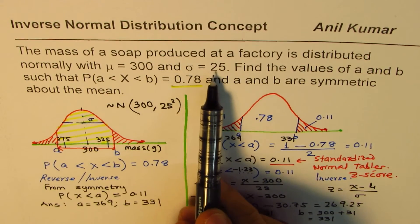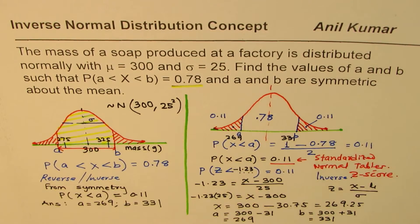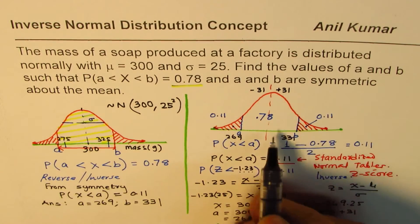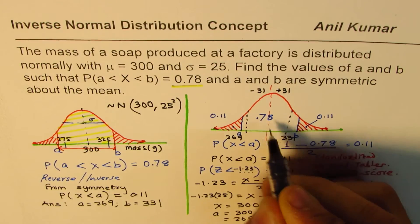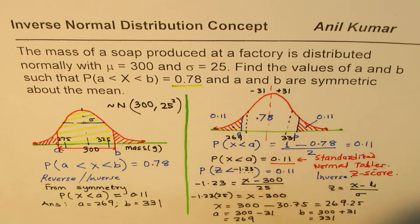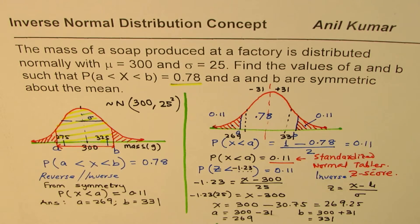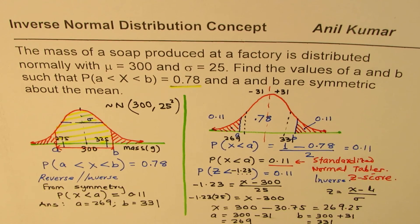We approximated 30.75 as 31, so plus or minus 31 gives us the 78% probability. As a sanity check: the standard deviation is 25, and we got plus or minus 31, which is just slightly more than one standard deviation. Within one standard deviation you expect 68% — this is 78%, slightly more, so the answer makes perfect sense. I'm Anil Kumar, and I hope these calculations help you understand inverse normal distribution. Please review the video, and all the best.